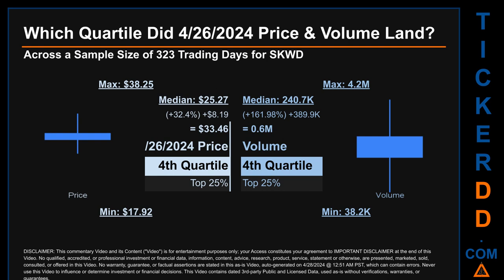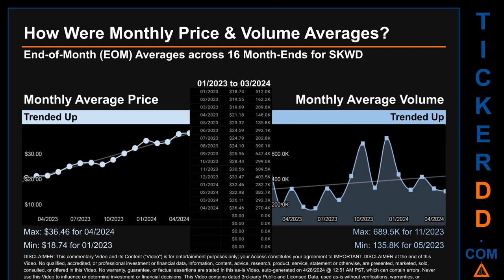Hello, my name is Claire. How were price and volume averages for SKWD? Across 323 trading days, there were a total of 16 month ends for which monthly averages for daily price and volume were calculated. Overall, monthly price average trended up while monthly volume average also trended up. The maximum end-of-month average price was $36.46 for April 2024, while the minimum was $18.74 for January 2023.